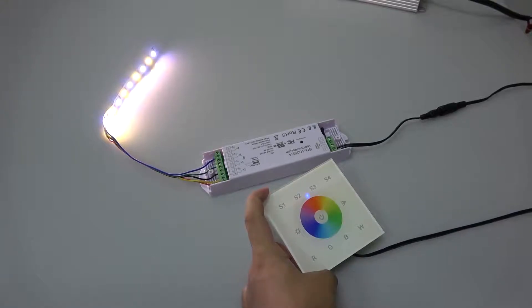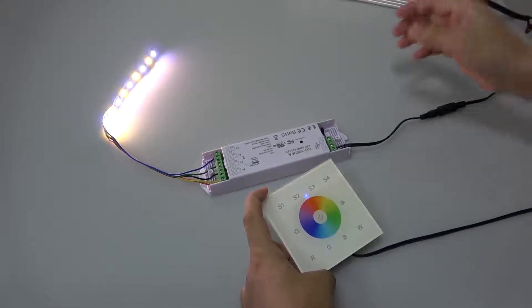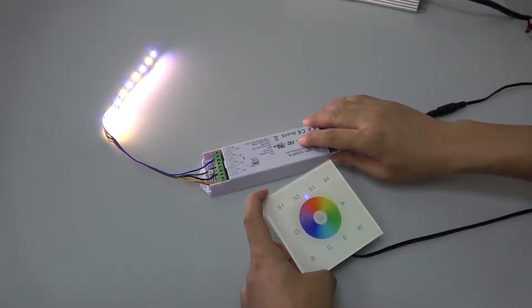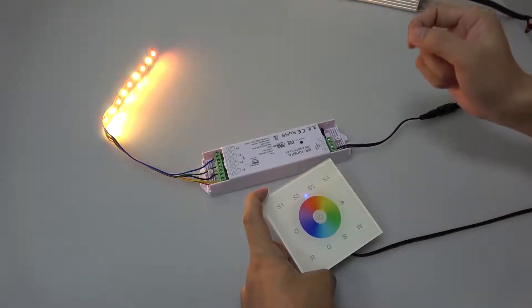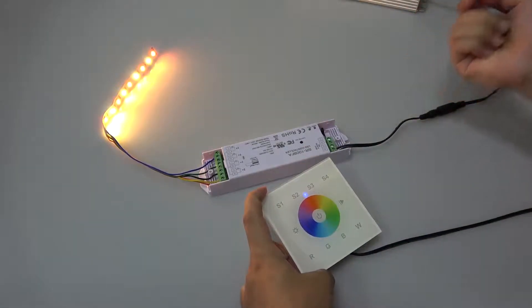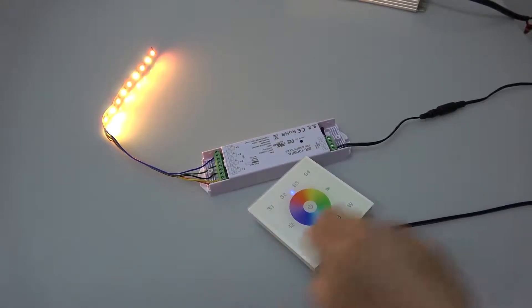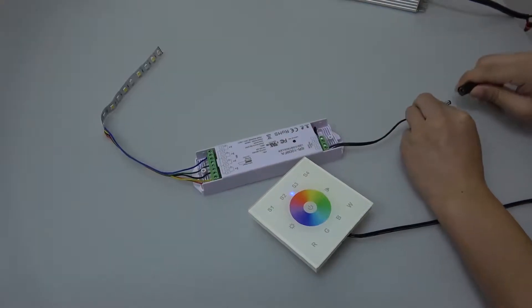For this touch panel, there's another way to delete the pairing. First, we pair it to the receiver. If you want to delete the pairing without using the learning key, first power off and power on the receiver.